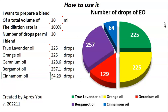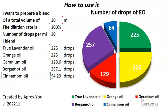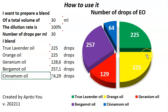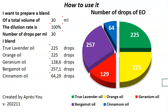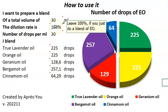Of course, if you want to do a blend that is a little more flowery with these five oils, you will add a little bit more true lavender and geranium. If you want a more citrusy blend, you will add a little bit more orange and bergamot. So you adjust — it's really the foundation of your blend but gives you a really good idea of how to start. As I said, in the calculator you can also change the dilution rate — and that's the second thing I will show, starting from this blend.